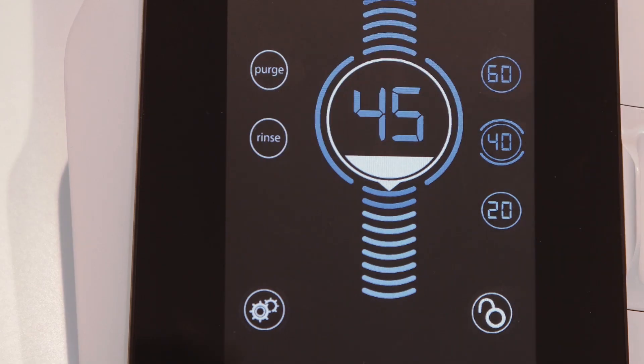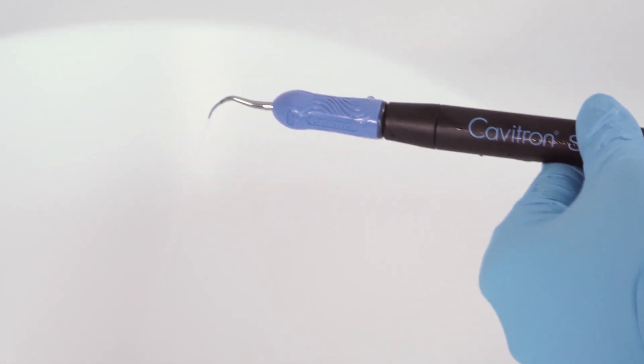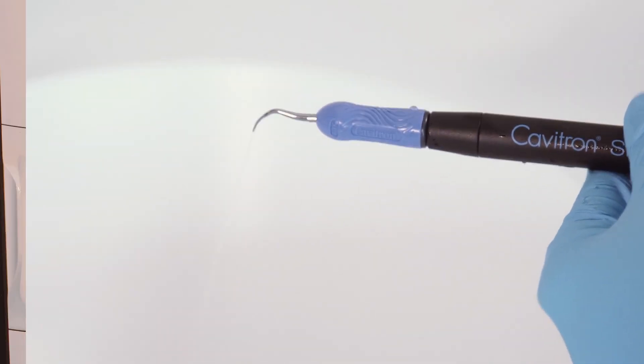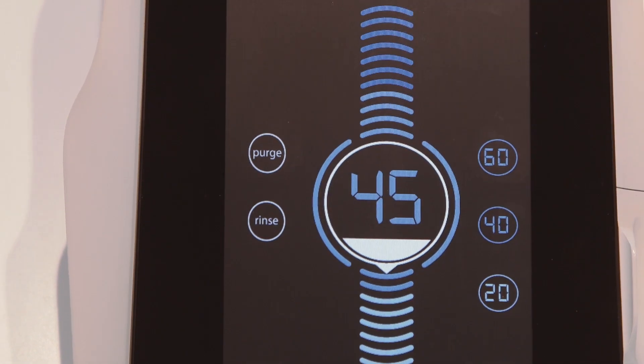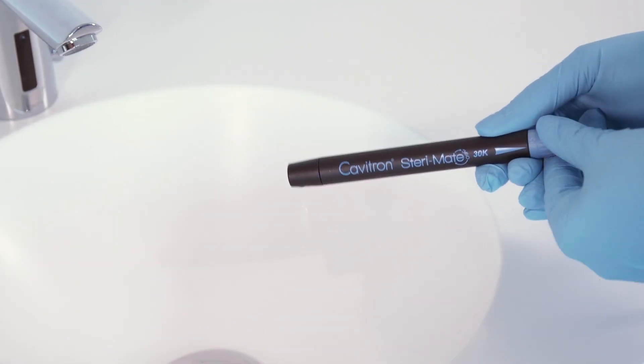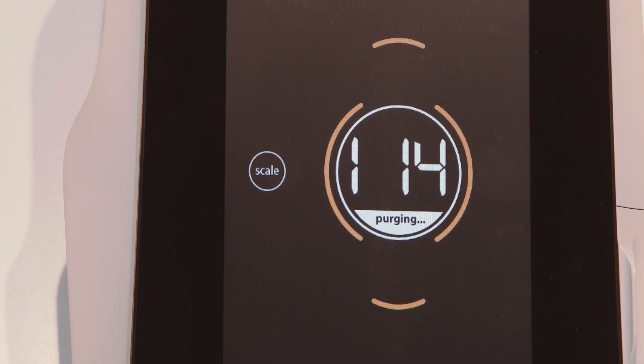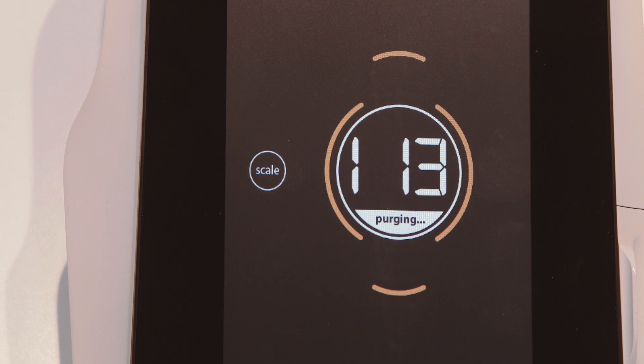The rinse icon is tapped to allow use of the handpiece for lavage only, without cavitation of the insert tip. The purge icon is tapped to access the feature which activates continuous water flow through the handpiece without an insert, for 120 seconds which is the suggested time to purge the water lines at the beginning of the day.